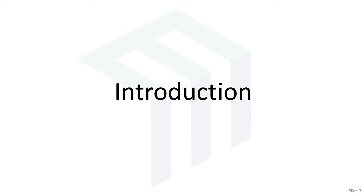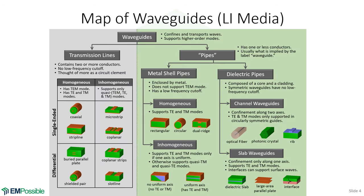Let's start with this map of waveguides. I've tried to capture all types of waveguides here, although I'm sure I'm missing something. Transmission lines are absolutely waveguides — we tend to forget about that for some pretty good reasons, but they're absolutely waveguides in every sense. Usually when somebody says the word 'waveguide,' they're talking about the types that are not transmission lines, and I will use it that way, even though 'waveguide' really is the overall term.